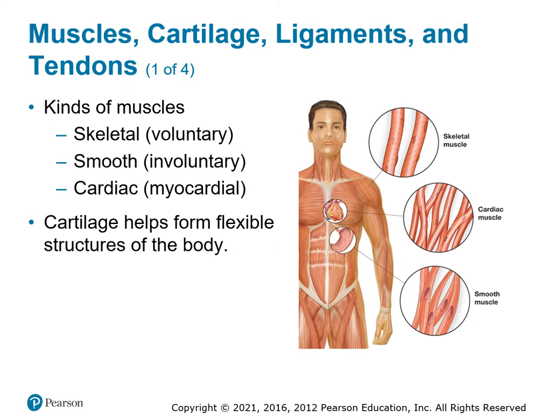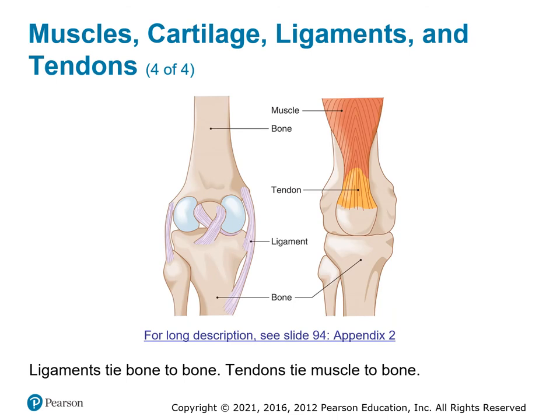Muscles: we've got skeletal muscles, smooth muscles, and cardiac muscles. The cartilage is that soft point between the bones that helps maintain movement and a little flexibility. This is a little bit more detail on your tendons and your ligaments. Tendons take the muscle and connect it to the bone — that's the patellar tendon you see in the picture connecting the quad to the patella. Then you've got the ACL, MCL, and the lateral ligaments connecting bones to bones, connecting the knee joint there.